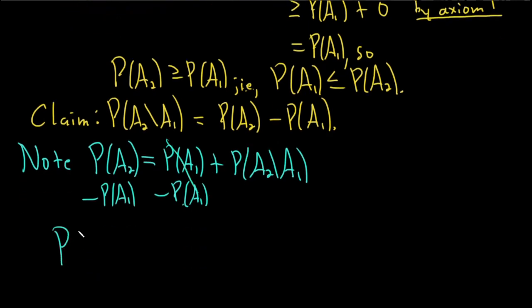And so it cancels here. So we have P of A sub 2 sub minus A sub 1 is equal to the probability of A sub 2 minus the probability of A sub 1. And that completes the proof.